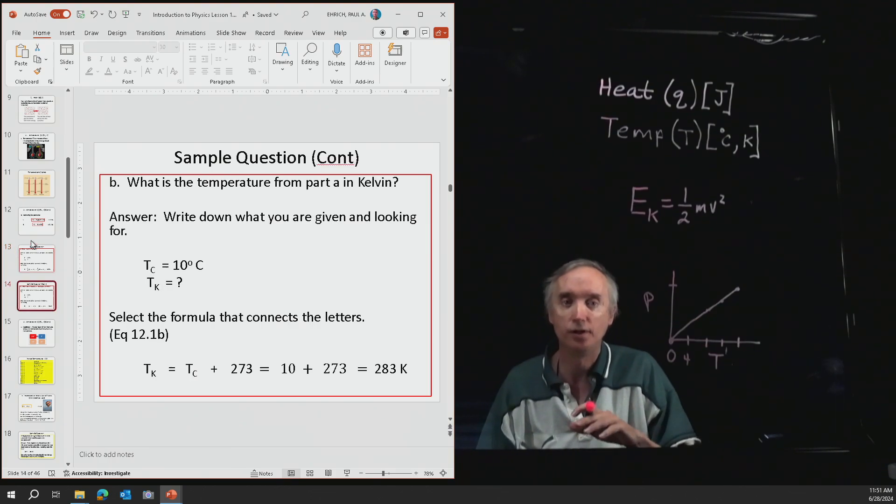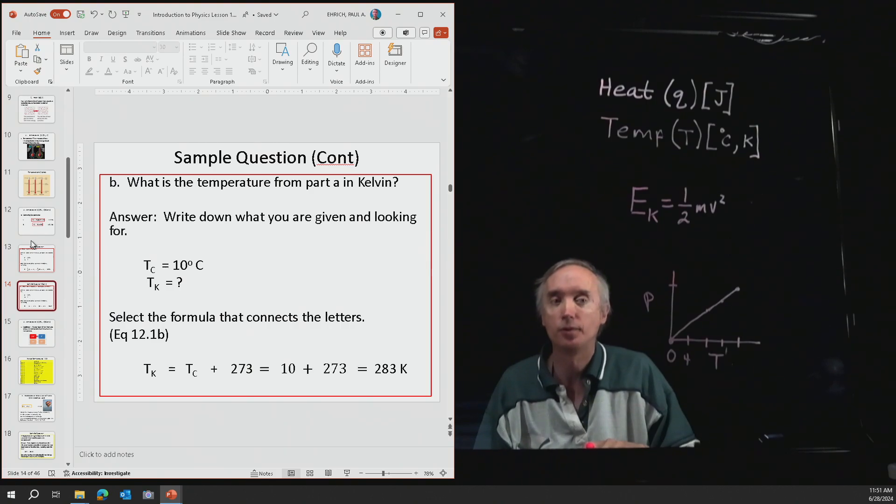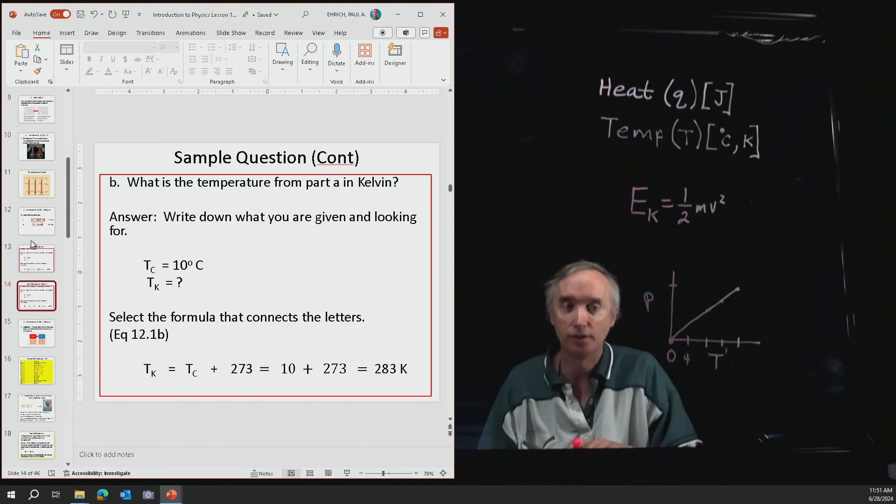In part two here, what would be the temperature from part A in Kelvin? So now we know that the temperature is 10 degrees Celsius, and we want to find the temperature in Kelvin. So now we're going to use equation 12.1b, and then just add 273 to it, and now we get 283, and then tack on the word Kelvin. So that's how you use those two formulas.